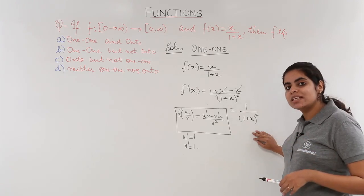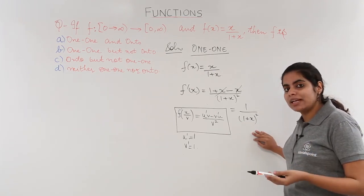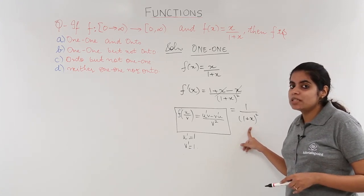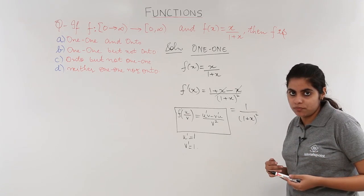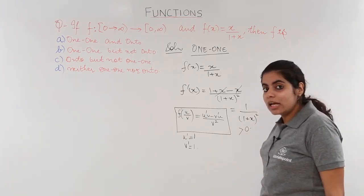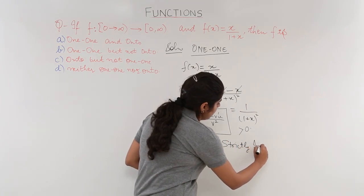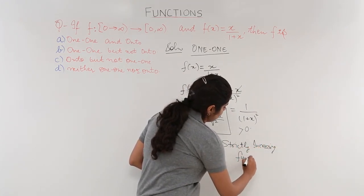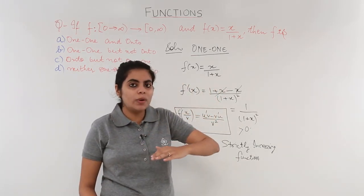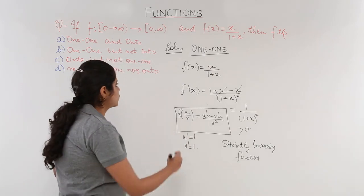To save time we can apply logic directly. The denominator is a whole square, which means it is always greater than zero — always positive. And 1 upon something positive is again always greater than zero. Since f'(x) is always positive, it is a strictly increasing function, and therefore it is a one-one function.